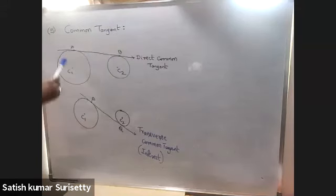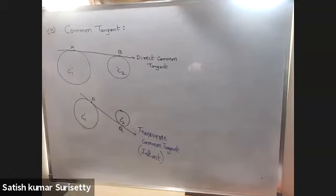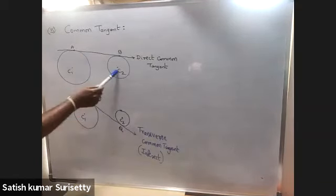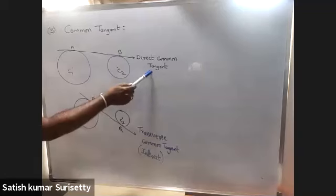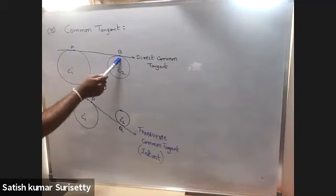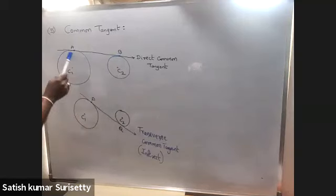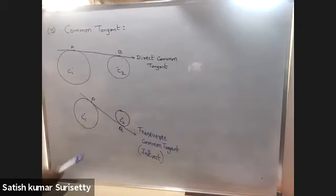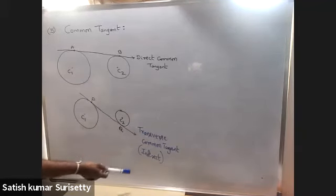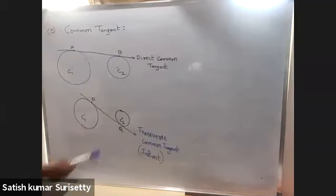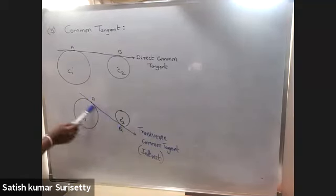Common tangents of two circles: if a line touches both circles, it is called a common tangent. There are two types. If both circles lie on the same side of the common tangent, it is called a direct common tangent, and the distance between the points of contact AB is called the length of the direct common tangent. If two circles lie on either side of the common tangent, it is called a transverse or indirect common tangent, and the distance PQ between the points of contact is called the length of the transverse common tangent.